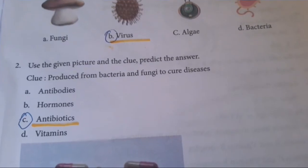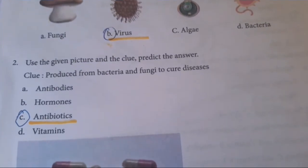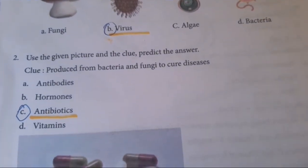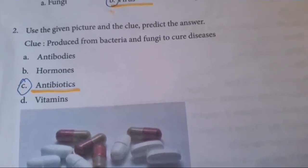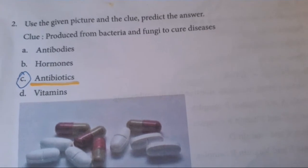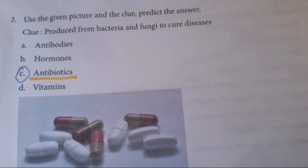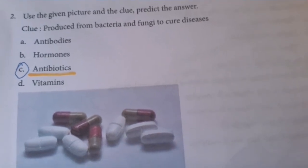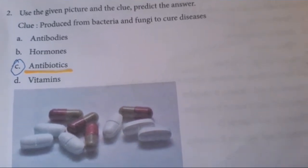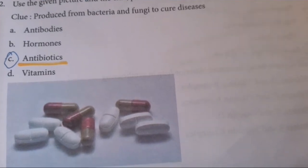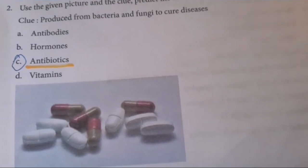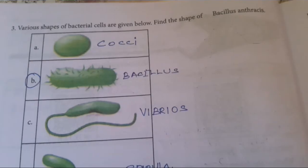Use the given picture and the clue to predict the answer. The clue is: produced from bacteria and fungi to cure diseases. To cure diseases means it is antibiotics. C is the answer.